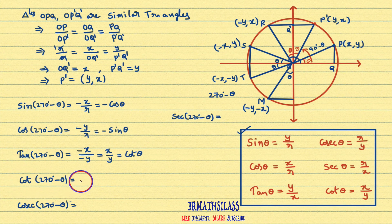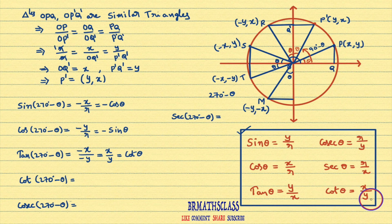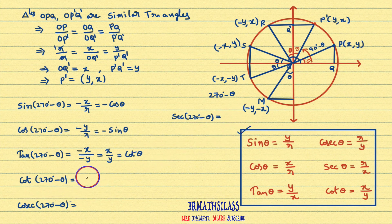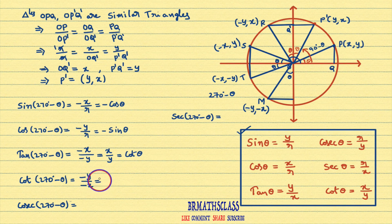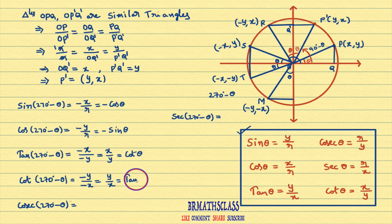Now, cot(270° - θ). Initially, cot θ is defined as the x-coordinate of the point divided by y-coordinate of the point. cot(270° - θ) means x-coordinate of point M divided by y-coordinate of point M. x-coordinate of point M is -y and y-coordinate of point M is -x. Here minus minus will get cancelled, you get y/x. y/x is tan θ. Therefore, cot(270° - θ) = tan θ.